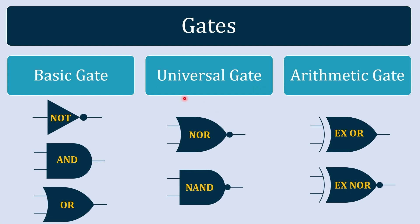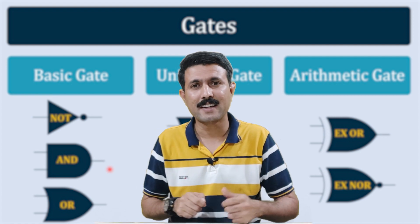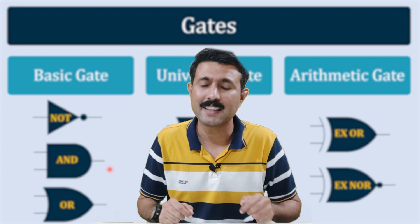So in this section we have understood universal gate using its truth table and its basic constructional circuit. In the next video we are going to understand the arithmetic gates and to watch that video you must click here.